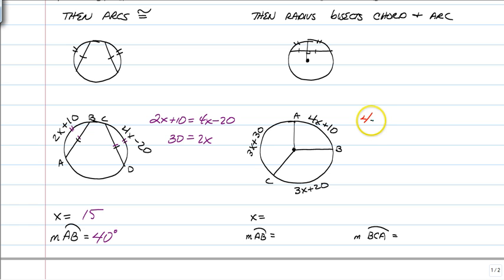So, to do this, all you have to do is add every arc, 4x plus 10, plus 3x, plus 20, plus 3x, plus 30, and set that equal to 360. And then you just have to simplify 10x, plus 60, is equal to 360. 10x is equal to 300, which means x is equal to 30.